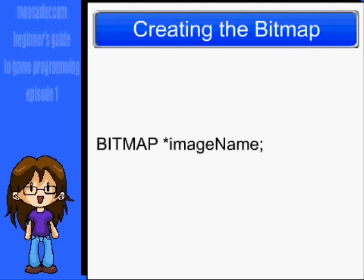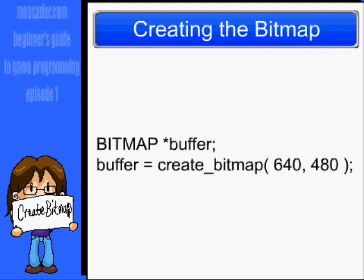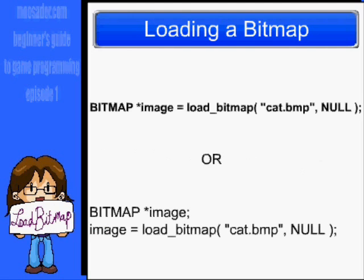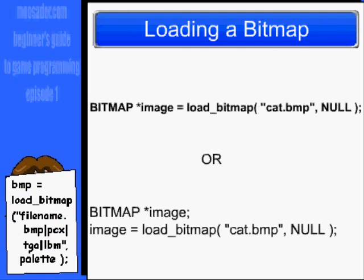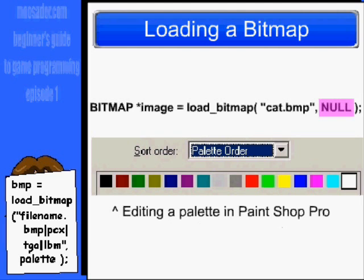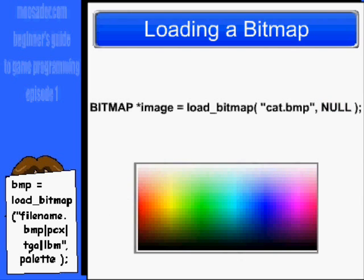In Allegro, your image types are called bitmaps. Before you use any graphics, you have to create them. You've already seen that we've used create_bitmap for the buffer, but most images you will load from outside the game. You can do that with the load_bitmap function like this: BITMAP *image = load_bitmap(filename, NULL). The null parameter is the palette, but you can keep this as null unless you're going to use a specific palette and not the full amount of colors available.